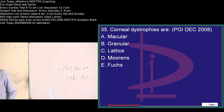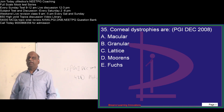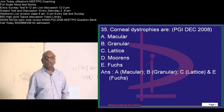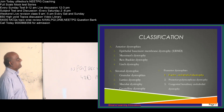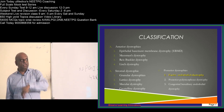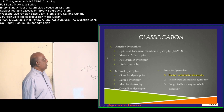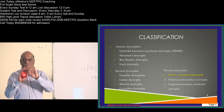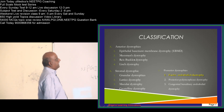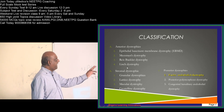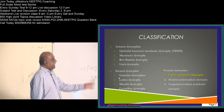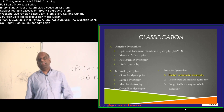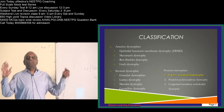Now, corneal dystrophies — how many varieties do you know? If you divide the classification, you have anterior dystrophies, stromal dystrophies, and posterior dystrophies. Meesmann's dystrophy, Reis-Bücklers dystrophy, and Lisch dystrophy are all anterior. Granular, lattice, macular, and crystalline dystrophies are all stromal dystrophies. Fuchs' endothelial dystrophy is a posterior dystrophy — that is the classification of corneal dystrophies you need to know.